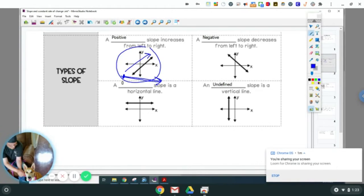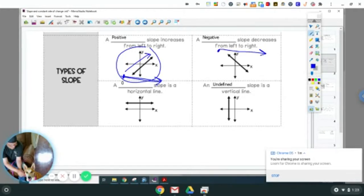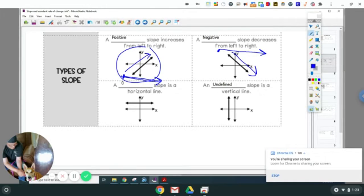At negative, you start at the left and go towards the right, and you see the line's going downwards, hence negative.